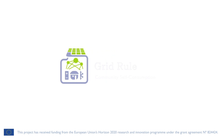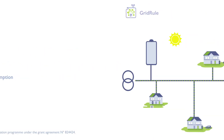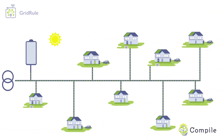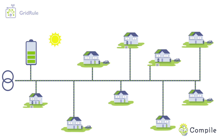Welcome to Compile Grid Rule, one of the project tools that help operate energy communities. The Compile Grid Rule tool enables managing of the community battery to improve the level of self-consumption within the community and to reduce the local network problems.